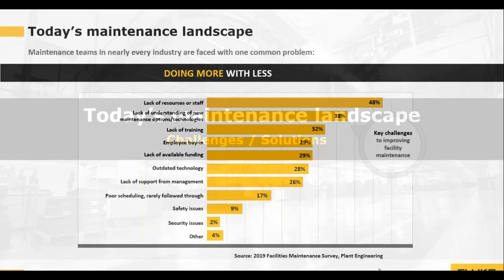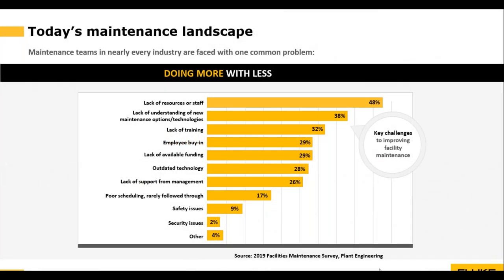So when we look at today's maintenance landscape, maintenance teams are all having to do more with less, and all with the cost of doing business increasing every day. As we talk to our customers for the past few years, we realize this is coming from three main causes: a retiring workforce, more complex machines and systems, and less funding with higher goals. It seems like things that used to be impossible are just getting worse and worse, and we can't ignore it. So what are maintenance teams supposed to do?